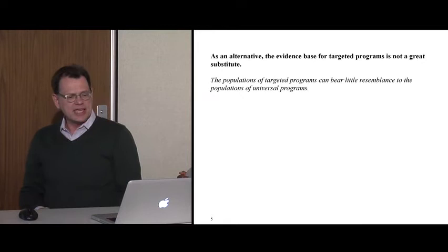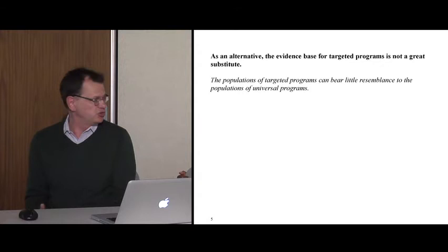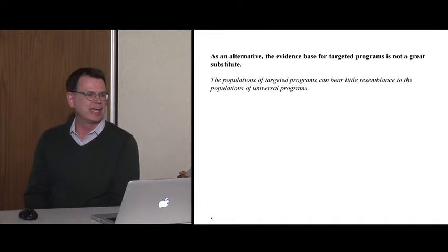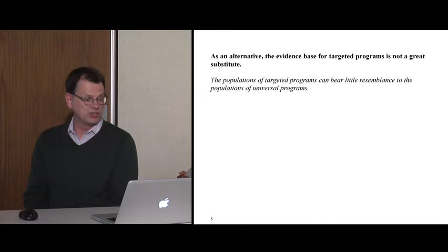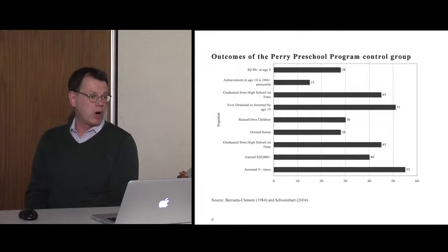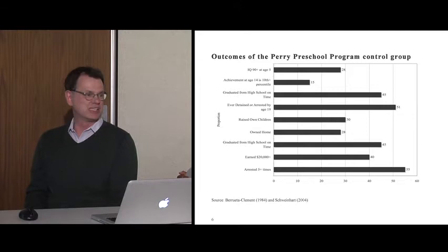The second point: backgrounders for universal programs often draw on evidence from targeted programs — perhaps because they show extraordinary benefits, and perhaps because there isn't a lot of direct evaluation of universal programs. But this may not be a great idea, for a couple of reasons. First, the populations of targeted programs can bear little resemblance to those treated by universal programs. The Perry Preschool Program is used in almost any backgrounder for children's programs because its effects are so extraordinary — but it treated only 123 African-American children facing quite desperate circumstances.